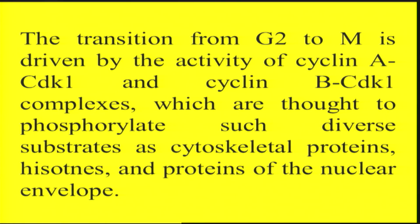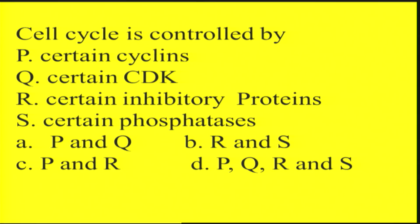Once M phase is reached, there would be degradation of cyclin A and D, and the cell cycle arrests at G0 phase. At G0, the cell takes a conscious decision whether to move ahead in the cell cycle or arrest. If there is no need to divide, there will be no buildup of cyclin D, and CDK4 and CDK6 cannot bring about any effect in the absence of cyclin D. The cell cycle is controlled by cyclins, CDKs, inhibitory proteins, and phosphatases.